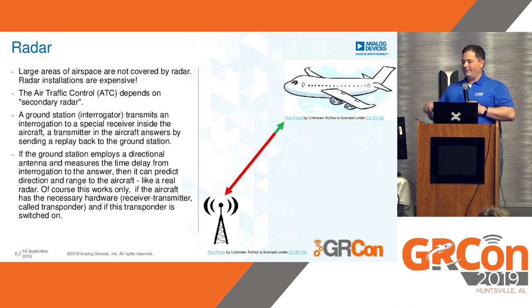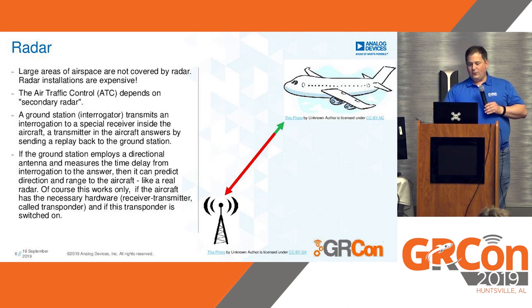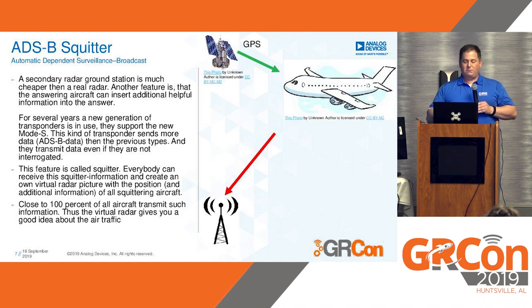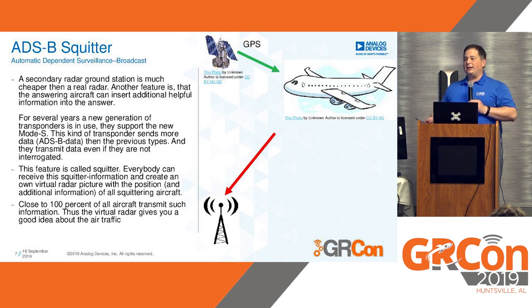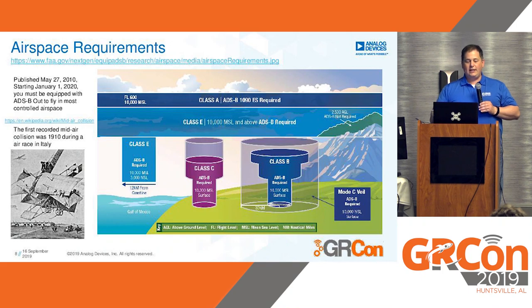We can only space airplanes out certain distances because we only know where they are once every eight seconds. So what everybody decided to do in the early 2000s was: we have this great GPS thing, the planes can all get GPS — so what if we just have the planes broadcast their GPS location? Once a second the planes actually broadcast their GPS location. And that's what ADS-B is.